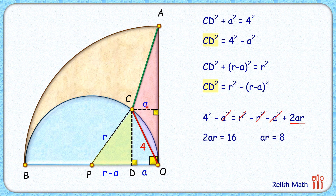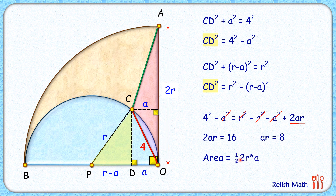From point C, let's drop a perpendicular on AO — its length will also be a centimeters. The length AO is two times the radius of the blue semicircle, or 2r. Area of this red triangle is half of base times height, which is half of 2r × a. The 2's cancel, so the area is r × a = 8 centimeters squared. That's our answer.